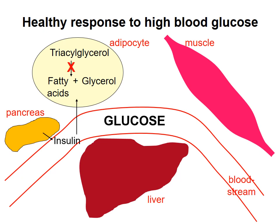In fact, insulin stimulates synthesis of fatty acids from acetyl-CoA and storage of fatty acids as triacylglycerol. In the liver, insulin promotes uptake of glucose and its storage as glycogen. Oxidation of glucose to produce ATP is also favored, as is the pentose phosphate pathway, which promotes biosynthesis.